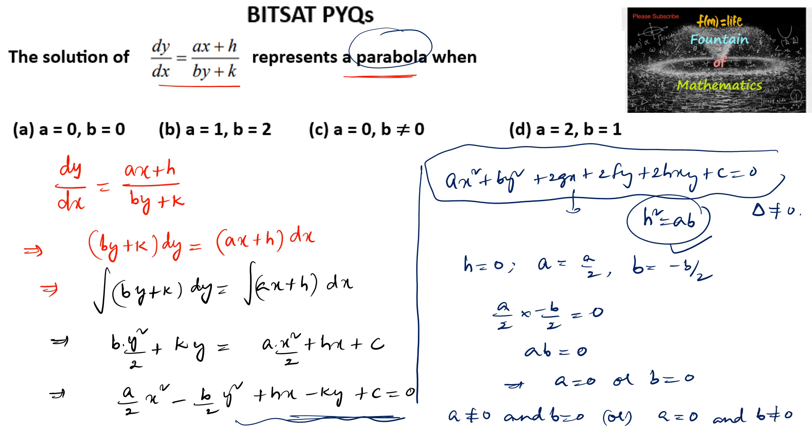We can go with option c. Option c is one of the conditions we have to represent a parabola.